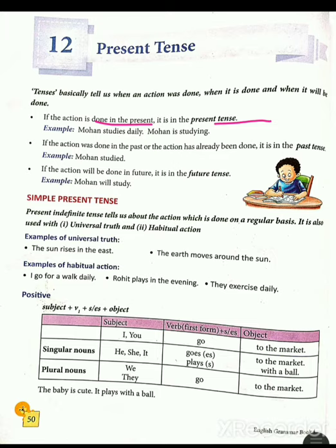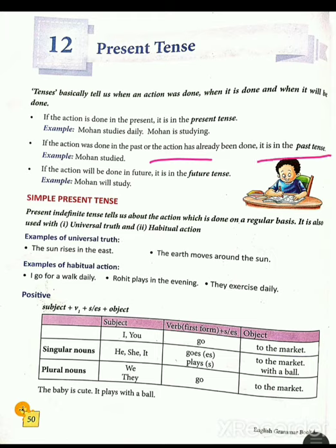For example, Mohan studies daily — Mohan daily study karta hai. Mohan is studying — Mohan padh raha hai. These sentences are examples of present tense. If the action was done in the past, or the action has already been done — agar koi action past mein hua hai ya already ho chuka hai — it is in the past tense.